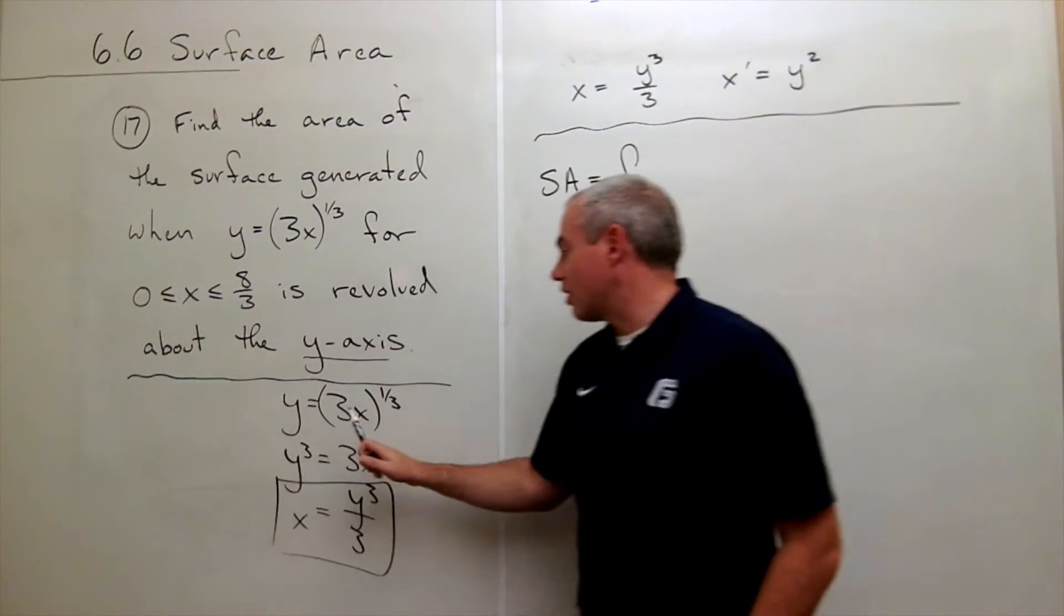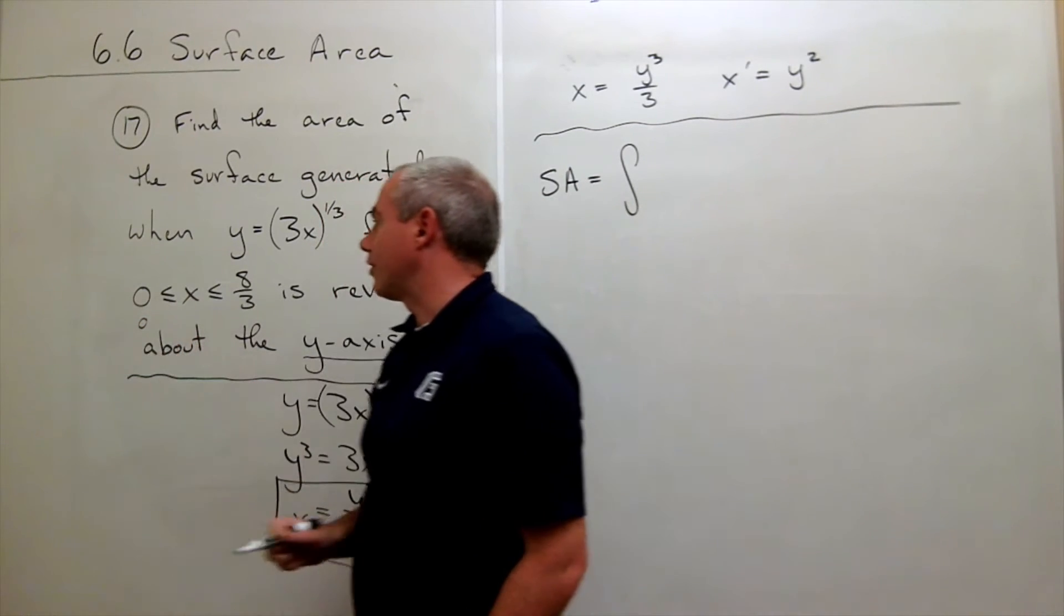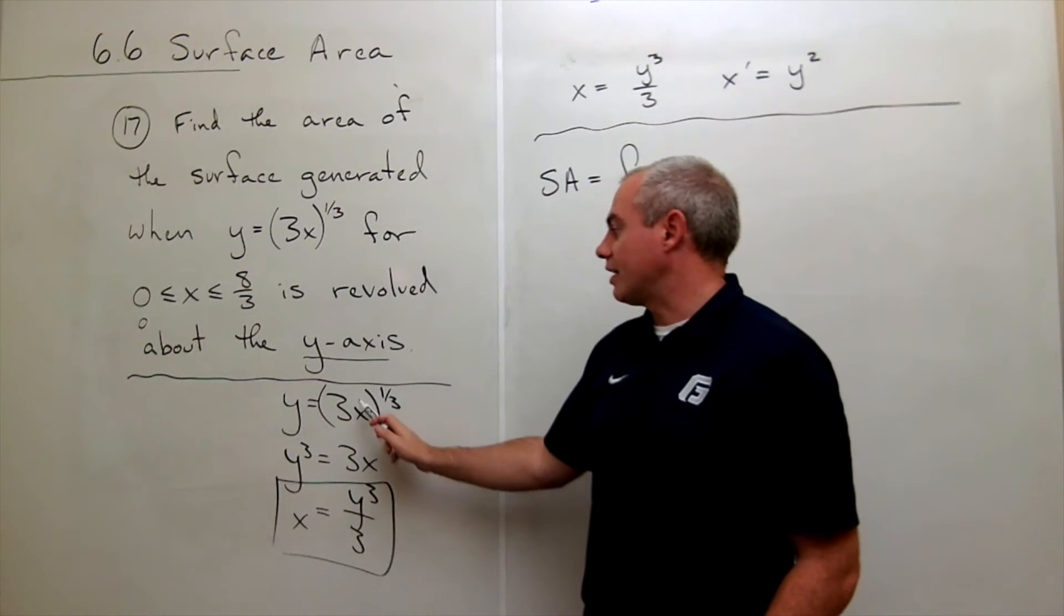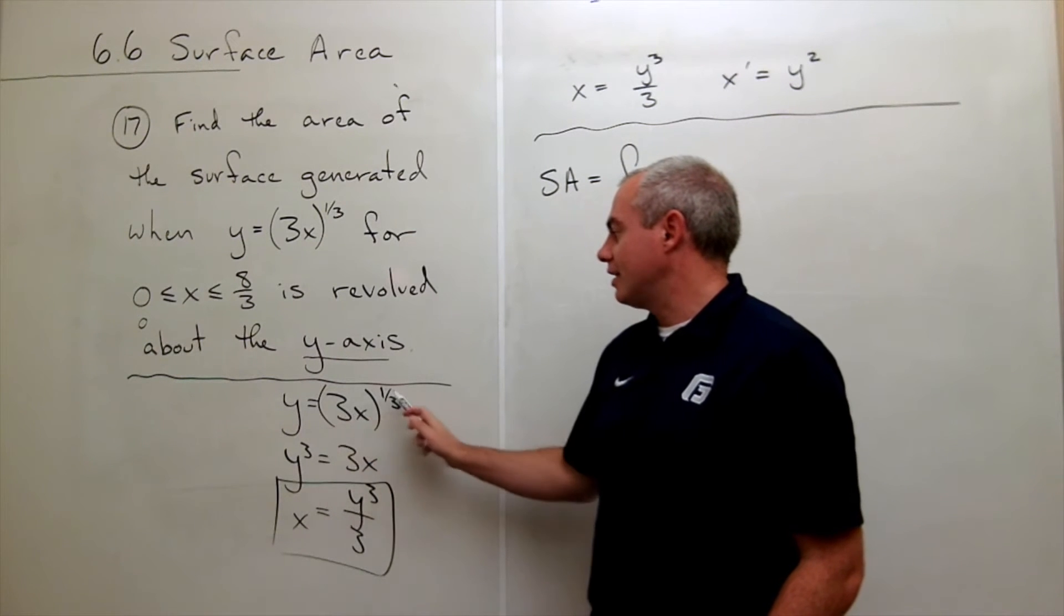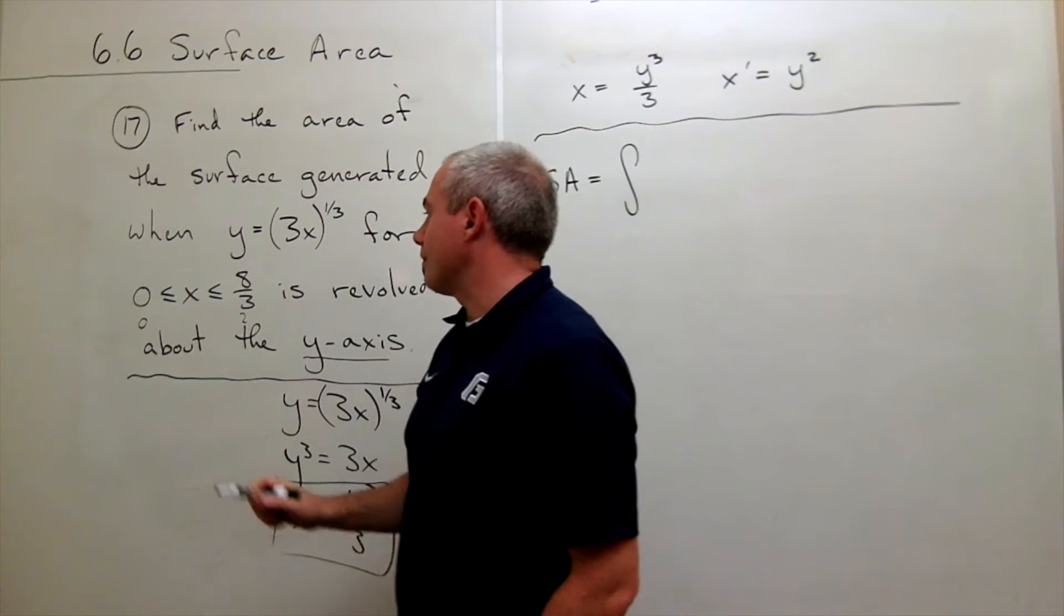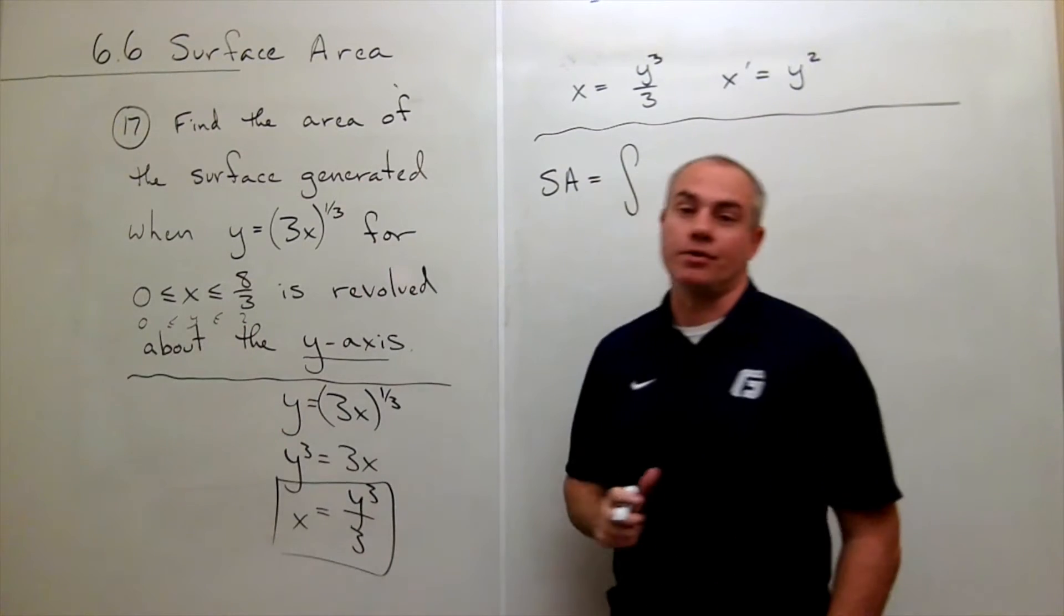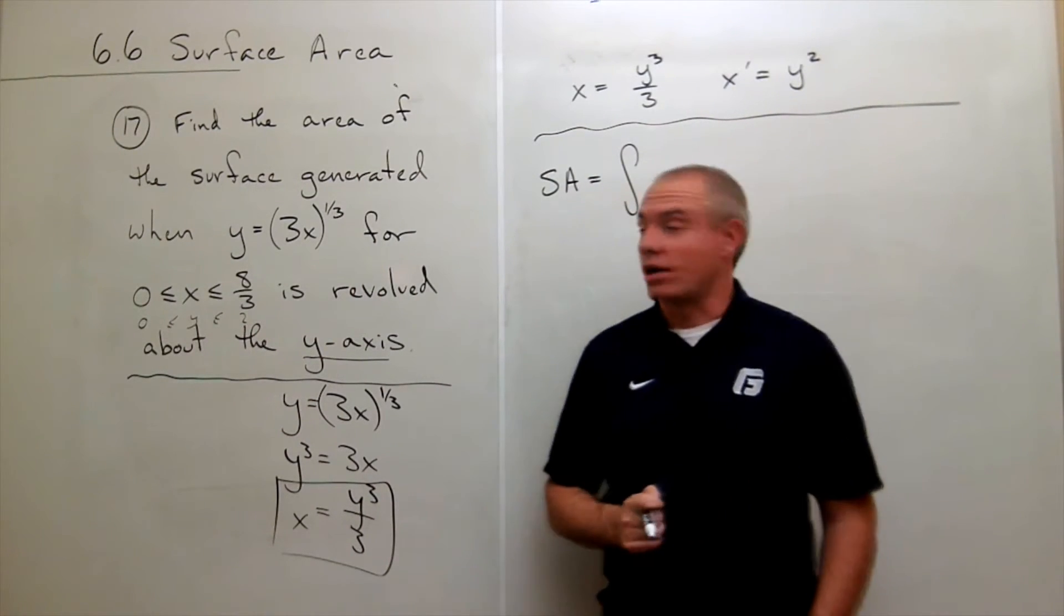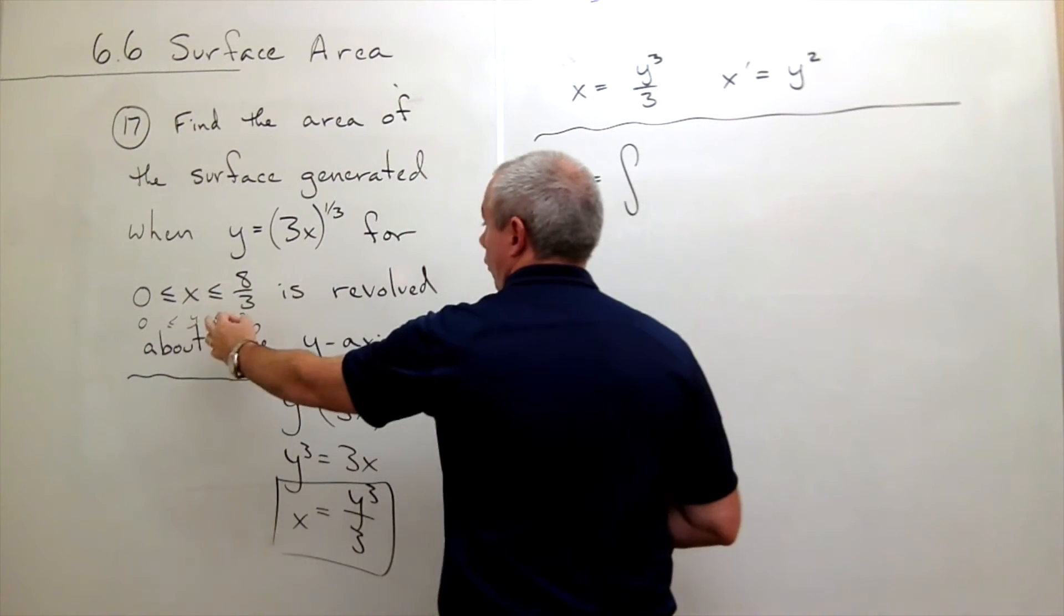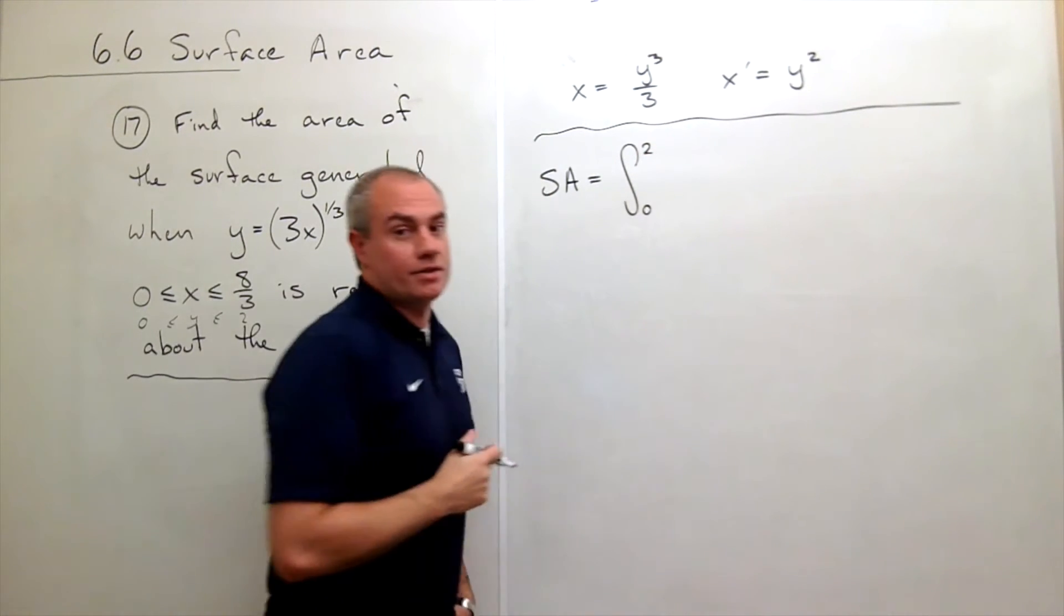So if I plug in 0 for x here, I get 0. And if I plugged in 8/3 here, I'd get 8/3 times 3 is 8, and the cube root of 8 is 2. So actually I'm integrating y between 0 and 2. So instead of integrating from 0 to 8/3, in y I'm integrating from 0 to 2.